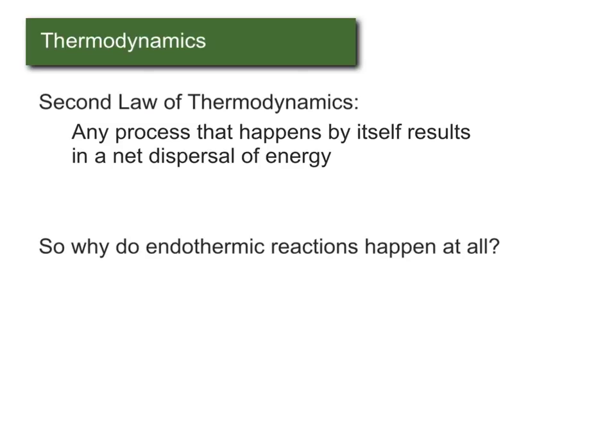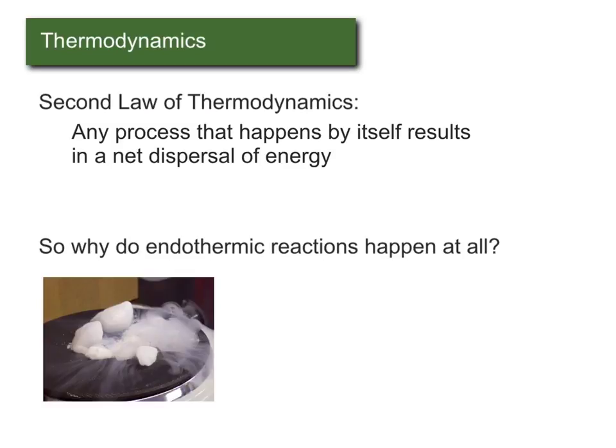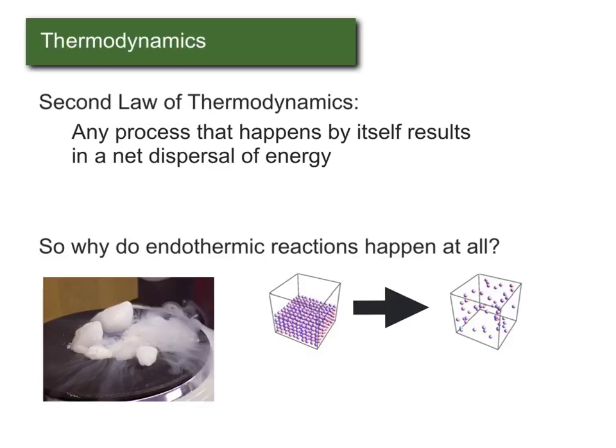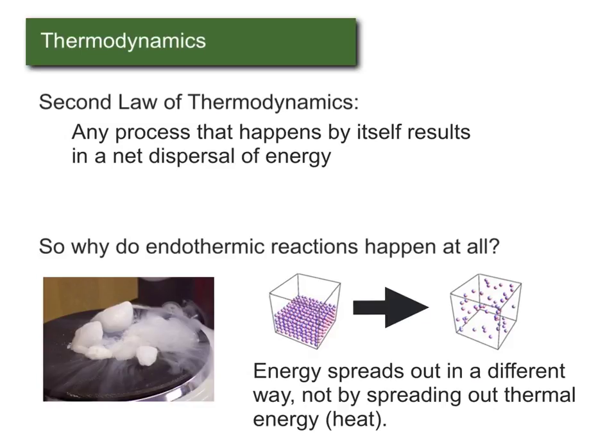So the reason it happens must be because we're spreading out energy in some other way. For example, if we go from having something in the solid state to being in the gas state, that energy is much more spread out because the gas molecules have many more places to be than they did when they were in the solid form. So that is one other way that energy can get spread out.